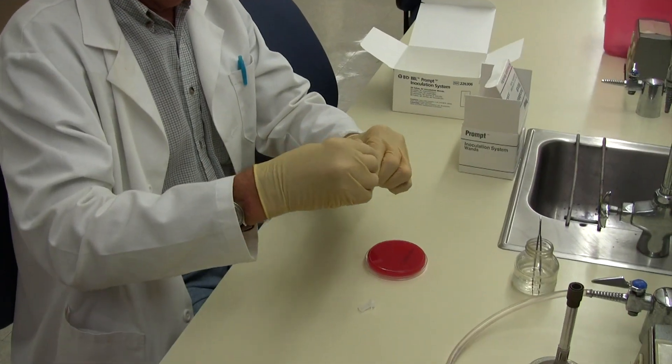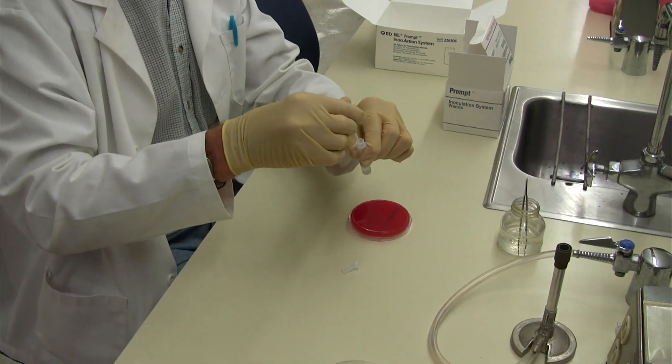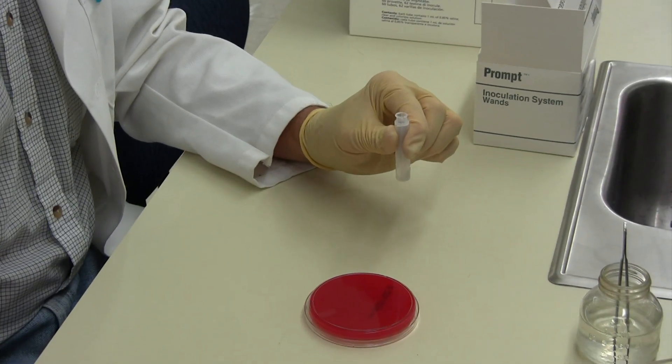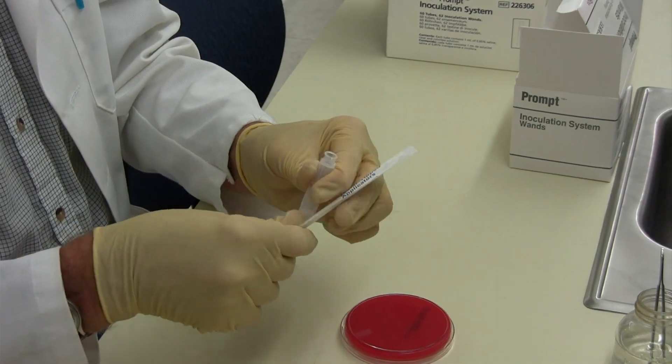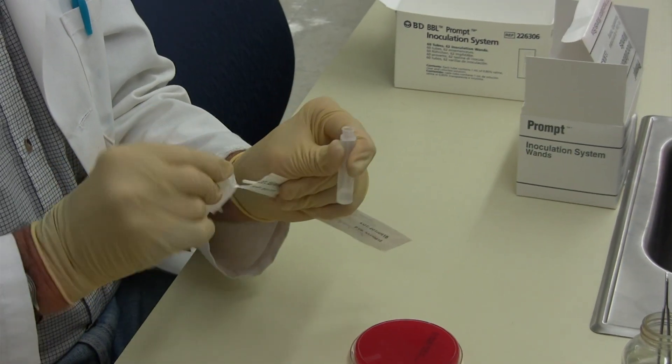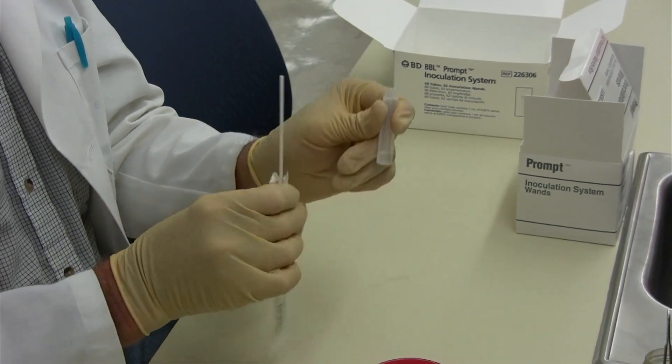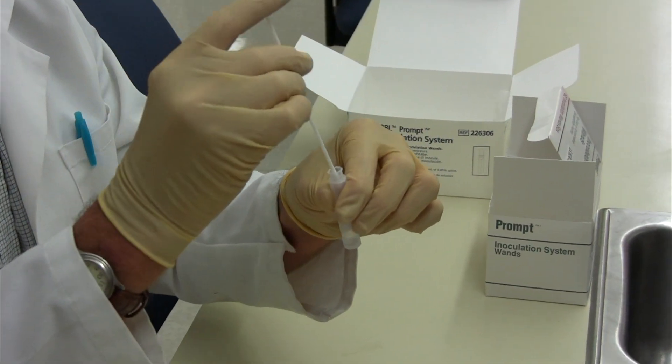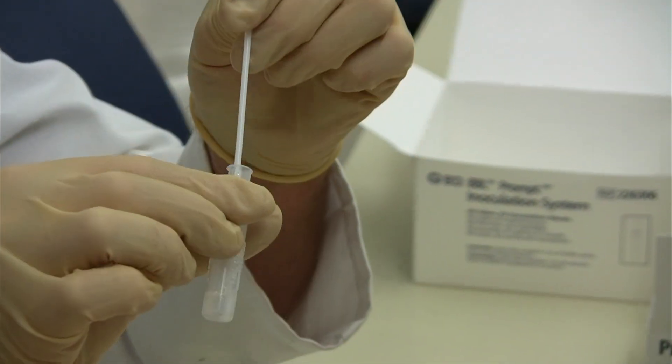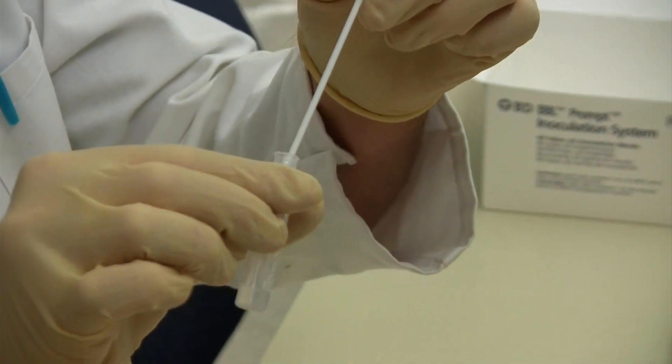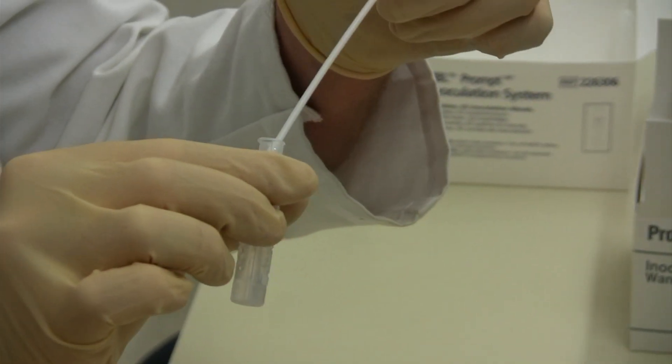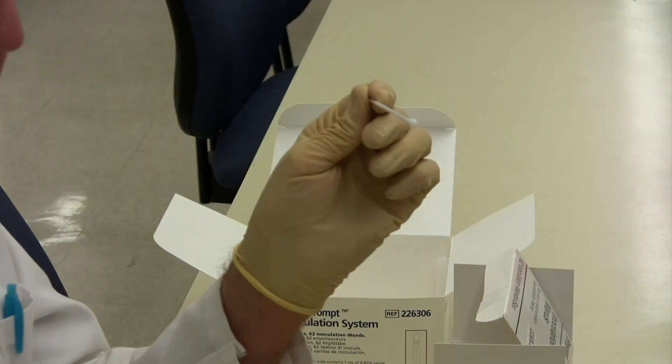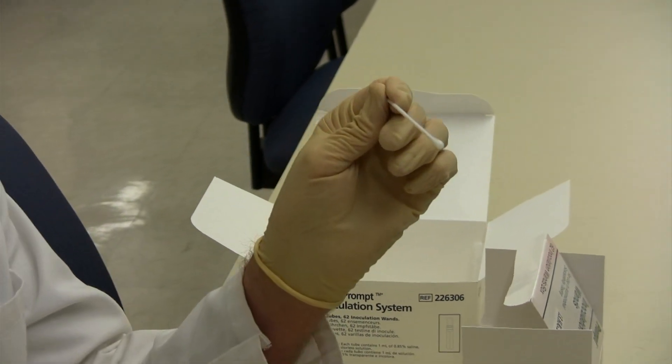Take a sterile swab and insert it into the bacteria suspension. As you bring it out, lightly wring it on the edge of the tube so you don't want your plate too wet with bacteria.